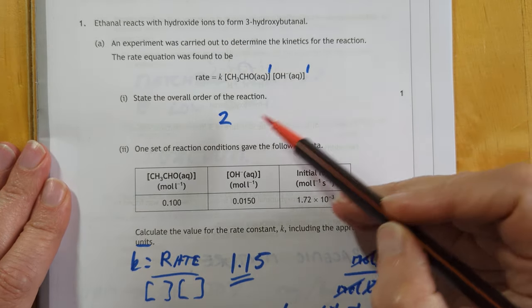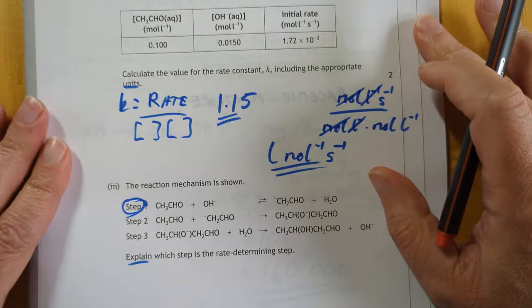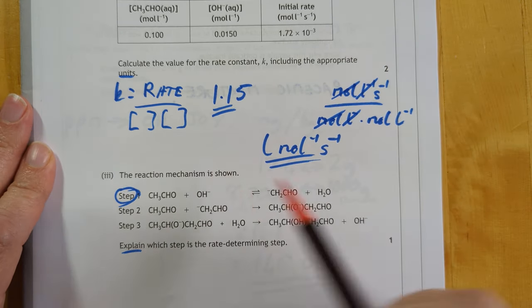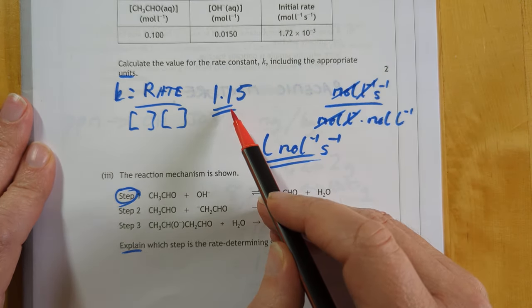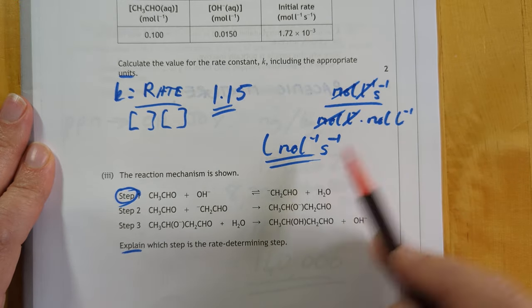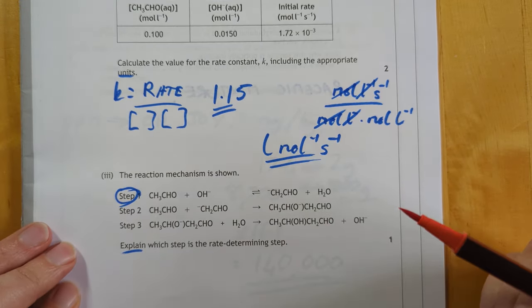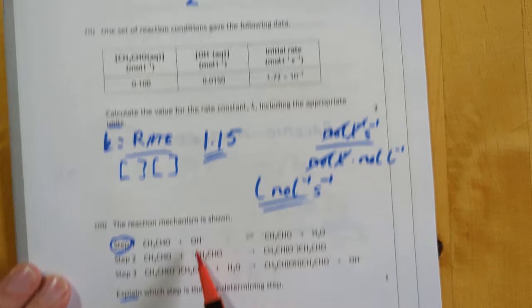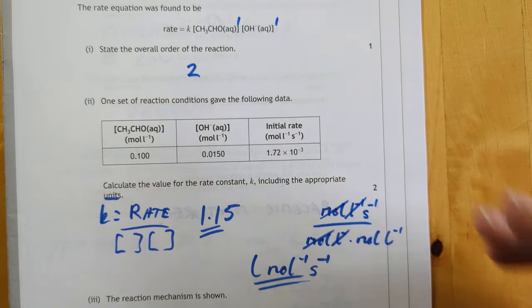State the overall order is 2. I'm going to rip through these very quickly. I got 1.15 for the value of k, and I got litres per mole per second. These can be any order by the way. The rate determining step is this one because it mentions the two things that were of course in our rate equation.